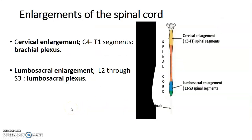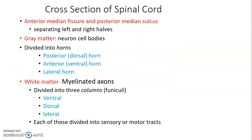There are two enlargements of the spinal cord. At the cervical region, C4 to T1 (sometimes C5 to T1), the enlargement forms the brachial plexus that innervates the upper limb. We also have the lumbosacral enlargement at L2 to S3 spinal segments, which forms the lumbosacral plexus that innervates the lower limbs.